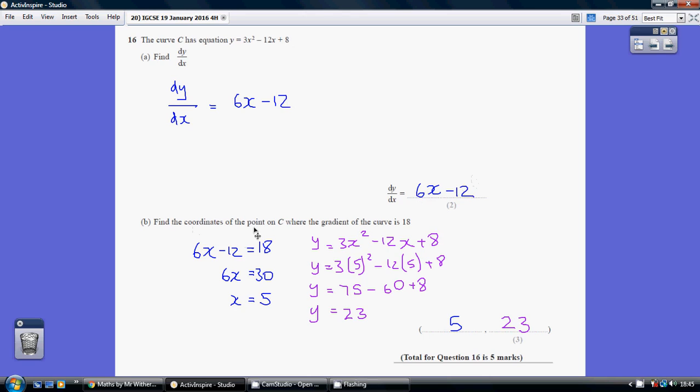Now, find the coordinates of the point on C where the gradient of the curve is 18. Remember, the differential allows you to work out the gradient at any point. So we need the gradient to be 18, so what x value gives us a gradient of 18? We set up 6x minus 12 equaling 18.